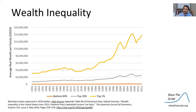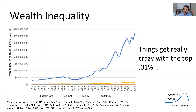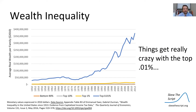Adding the gray line for the top 10%, we can see that the orange line for the bottom 90% is basically flat when charted on the same axis — their wealth growth is quite small compared to the top 10%. Adding the yellow line for the top 1%, it dwarfs both the gray and the orange lines. Things get really extreme with the top 0.01% — every other line looks small compared to the growth in the top 0.01%. The bottom line is that growth is higher for individuals in higher wealth brackets.